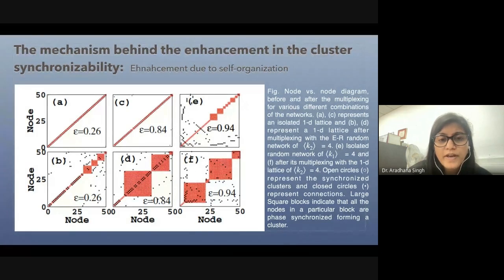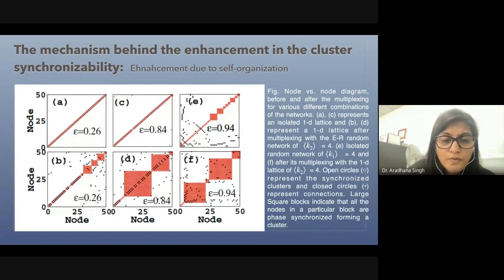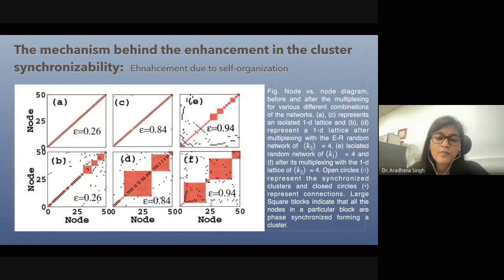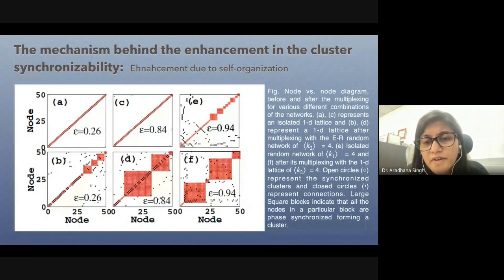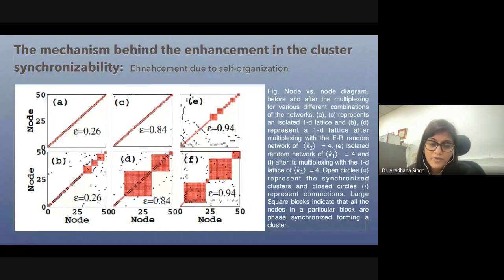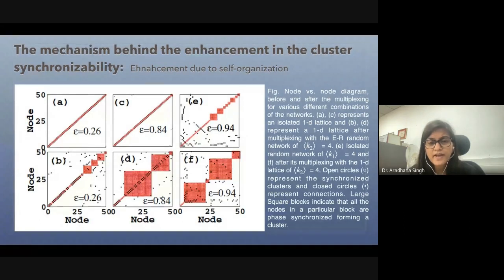At epsilon = 0.84, there is no cluster formation in the isolated network, but as we multiplex it, cluster formation happens. The squares represent different clusters and the black dots are the connections. The presence of black dots within the squares shows these clusters are formed because of the self-organized mechanism. In panels E and F we can see fewer clusters of the driven type — no black dots in the squares — but as we multiplex, the synchronization enhances, we get bigger squares with black dots inside, indicating these clusters are formed by the self-organized mechanism.